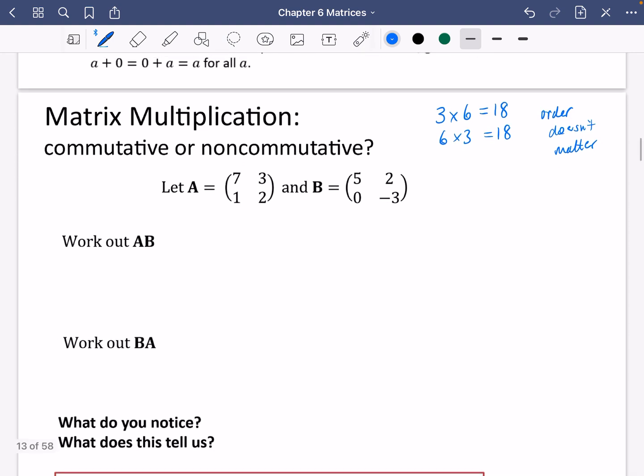So let's quickly work out these ones that we've got here. Let's do A, B. So we're going to do 7, 3, 1, 2 and we're going to multiply that by 5, 2, 0, 3. So I've got 35 and the 0 there which is just 35. I've then got 14 minus 9 which is 5. Then I've got the 5 times the 0 which is just, sorry the 5 add the 0 which is just 5. I've then got the 2 minus 6 which is minus 4.